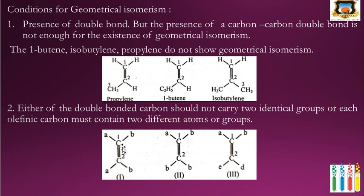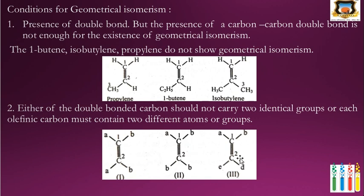In the first example, each double-bonded carbon bears two different groups A and B, so it shows geometrical isomerism — when A and A are on the same side it is cis, and when on opposite sides it is trans. In the second compound, one carbon bears A and B but the second carbon bears two identical groups, so it does not show geometrical isomerism. When all four substituents on the two double-bonded carbons are different (A, B on one and C, D on the other), E and Z nomenclature is used for such compounds.